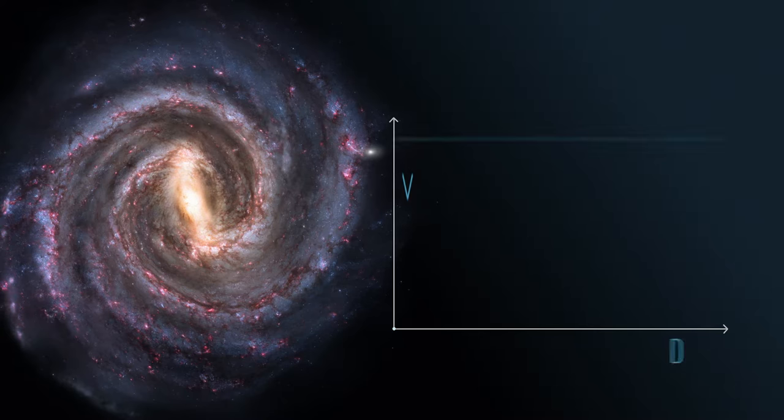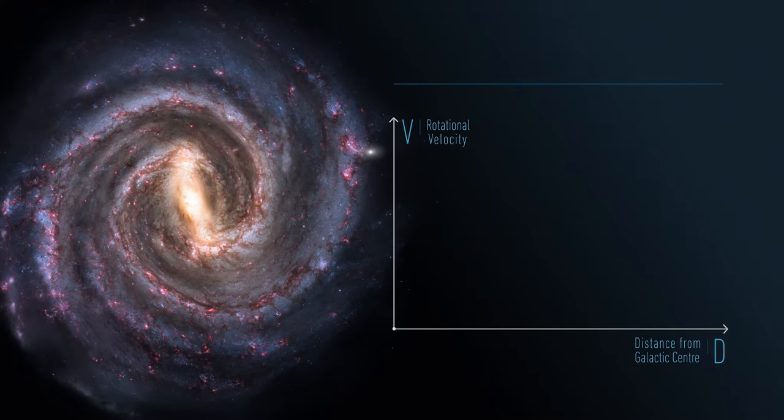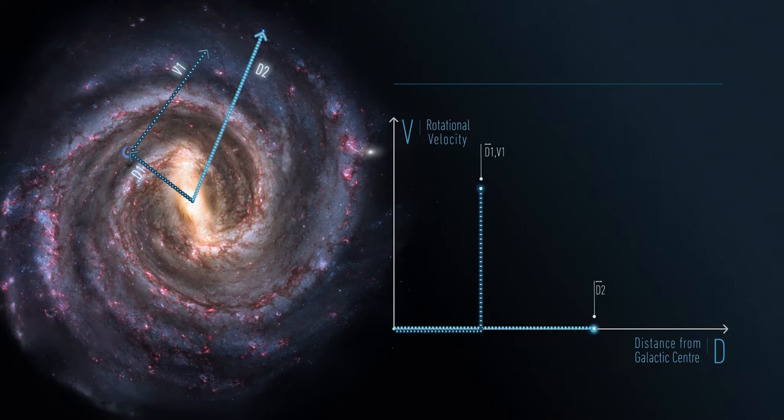If a large spiral galaxy consisted solely of atoms, the ordinary visible matter, the inner stars would rotate at a higher speed than the outer ones. This would be seen clearly in the rotational velocity plot.